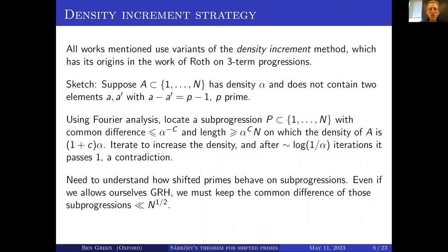It has to do with zeros of Dirichlet L-functions, and even if you allowed yourself to assume the GRH, you're not likely to be able to understand what happens when the common difference goes much beyond square root of n. That's a hard barrier to that method.